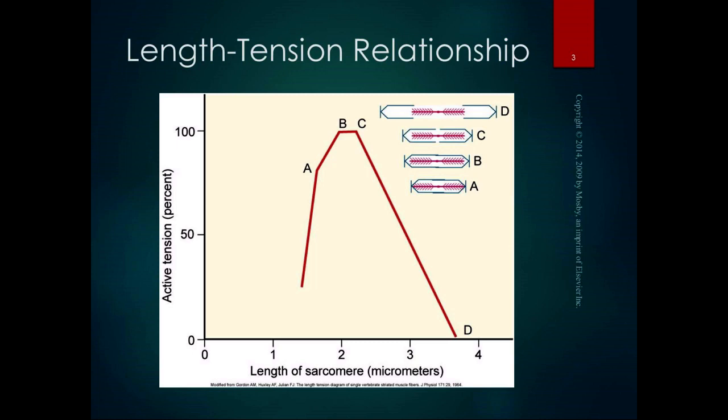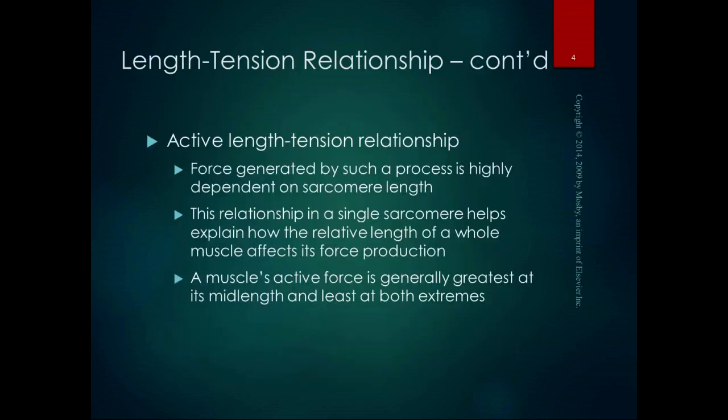So if the muscle is either at its most shortened position or its most lengthened position, that's where it's at its weakest. When it's more in the middle of its excursion range, that's when it's at its strongest. The idea is that you have to have room for the actin and myosin fibers to cross over one another. In the active length-tension relationship, the force generated is dependent on sarcomere length.